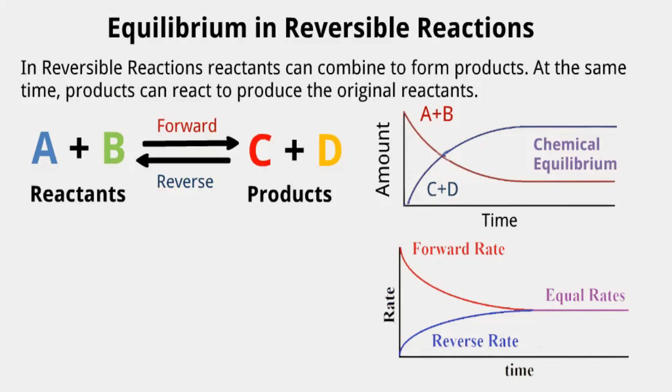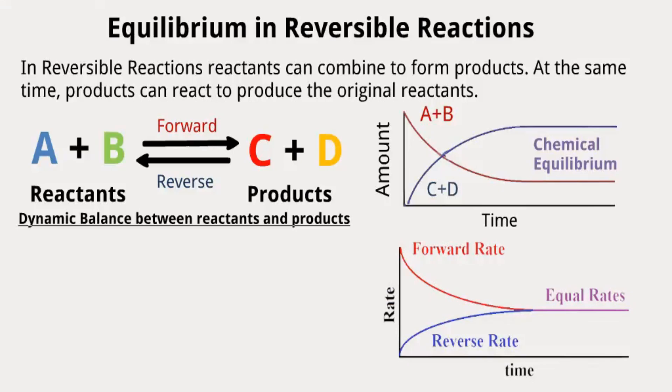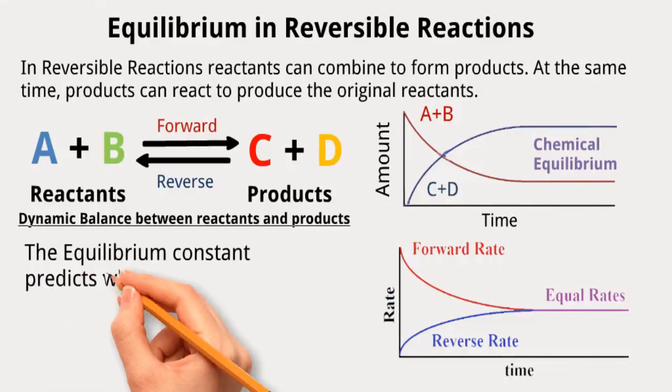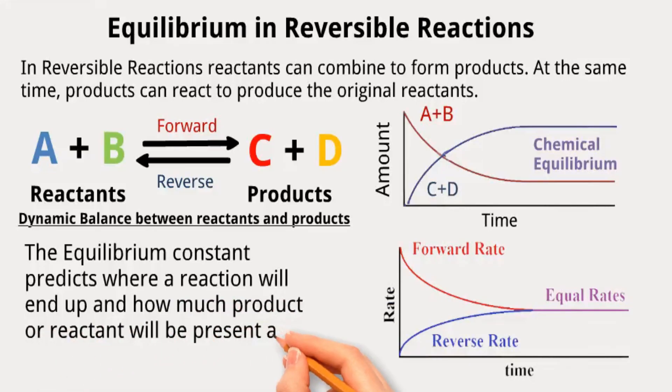So, chemical equilibrium refers to a state in a reversible reaction where the rates of the forward and reverse reactions are equal, resulting in a dynamic balance between reactants and products. At equilibrium, we will have a constant ratio of reactants to products. This ratio is called an equilibrium constant. In other words, the equilibrium constant predicts where a reaction will end up and how much product or reactant will be present at an equilibrium point.